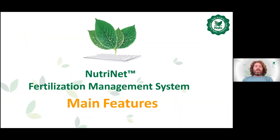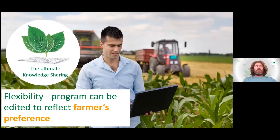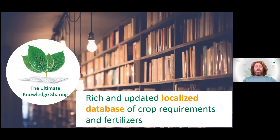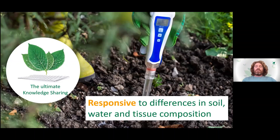Let's go through some main features of the software. First of all, the software is very flexible — the program can be edited to reflect your own preferences. The software is rich and updated with a localized database of crop requirements and fertilizers that are specific for your country and location, and it's responsive to differences in soil, water, and tissue composition. All of this together gives you a tailor-made fertilization program just for you.